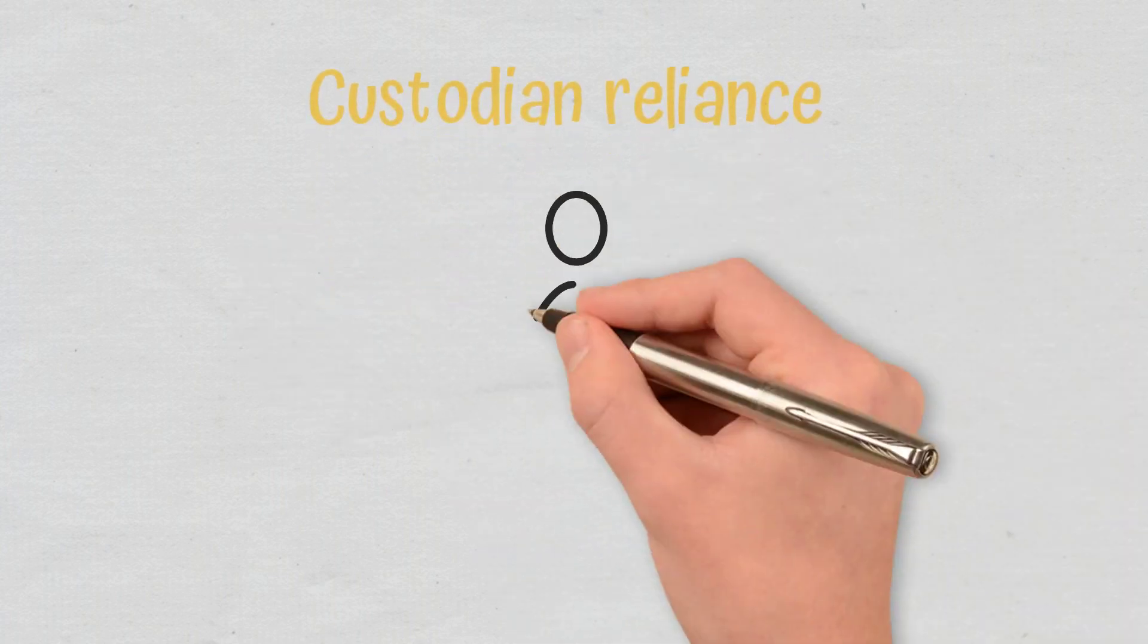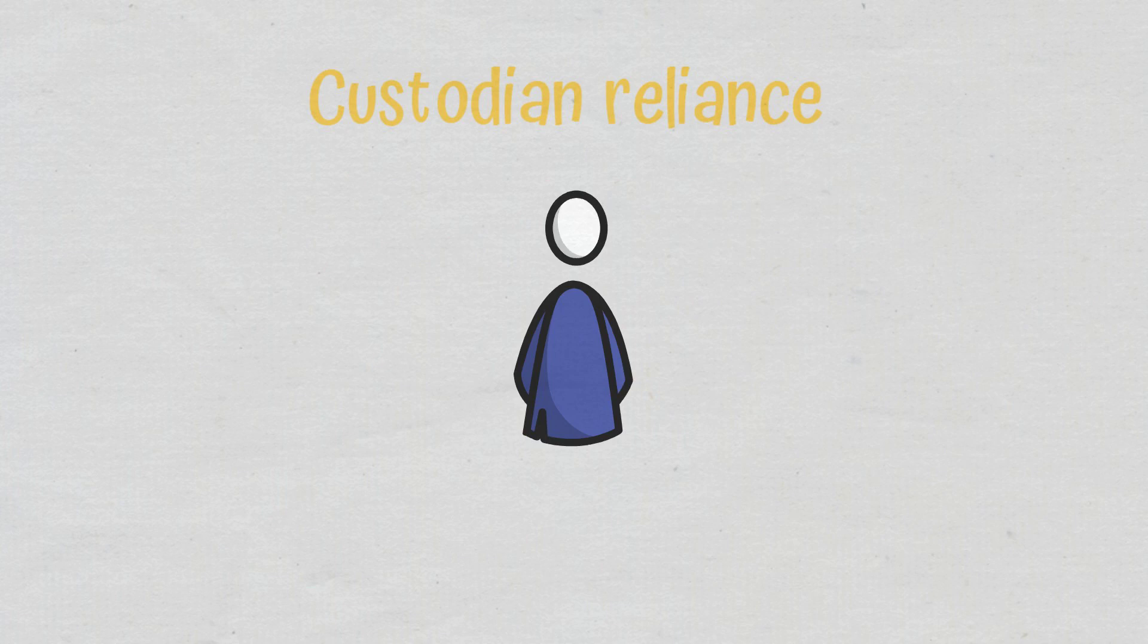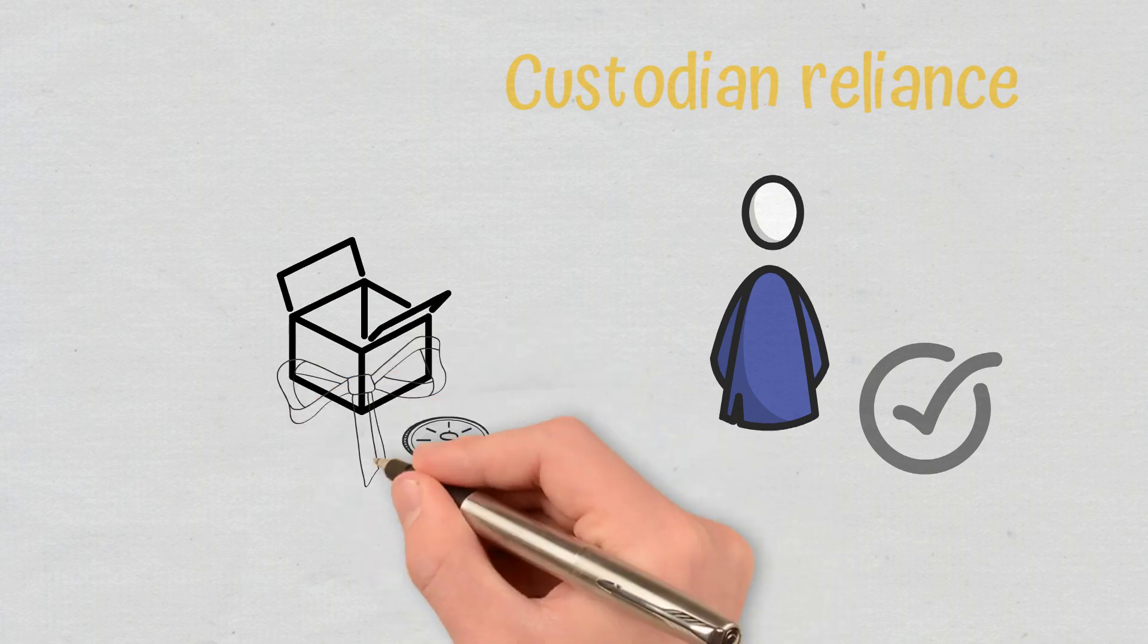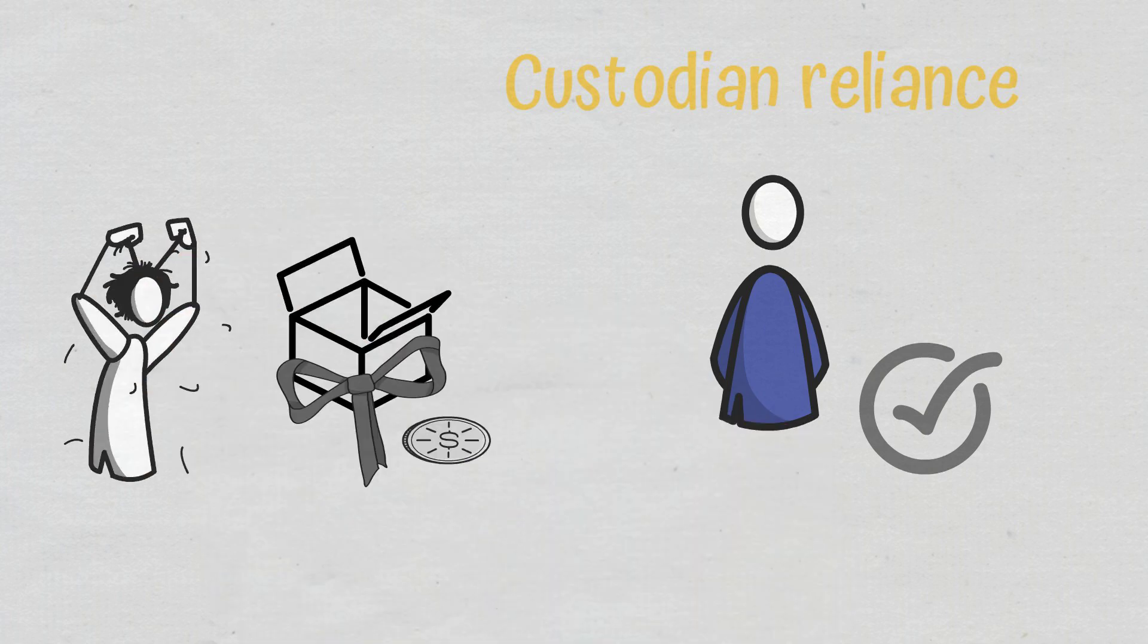Cons of Wrapped Tokens. Some of their disadvantages are Custodian Reliance. Since a custodian is required for this, it must be trustworthy. If it is somehow flawed, the wrapping-unwrapping process is flawed as well.